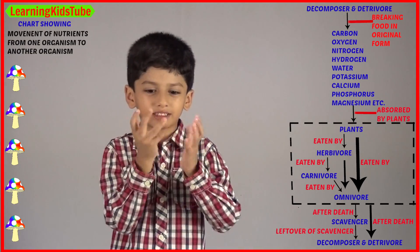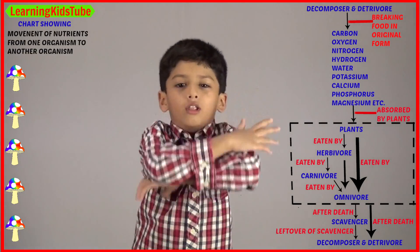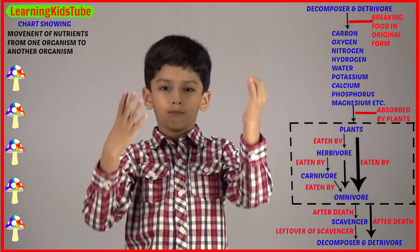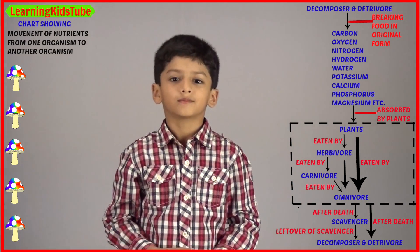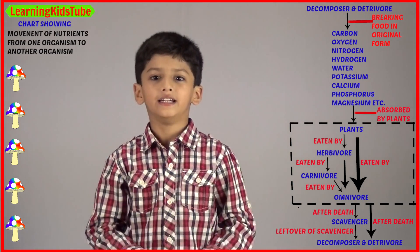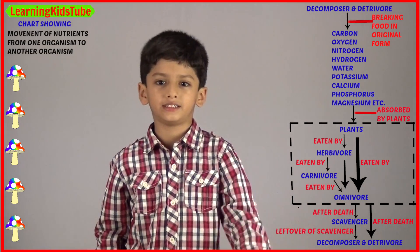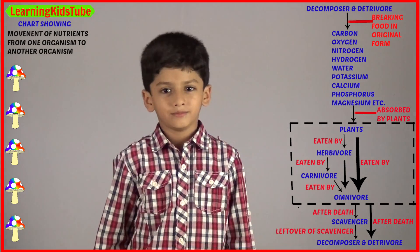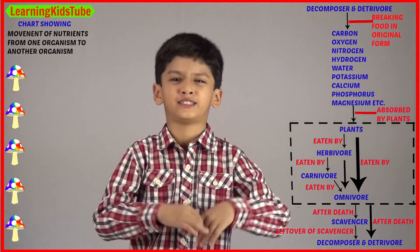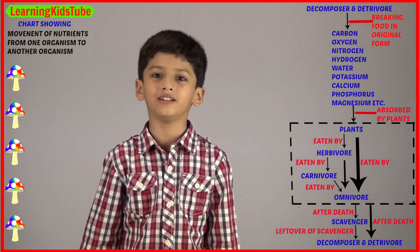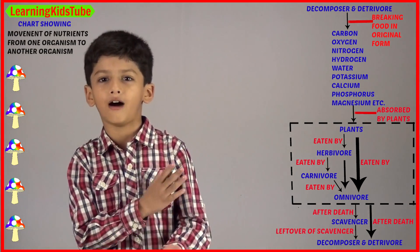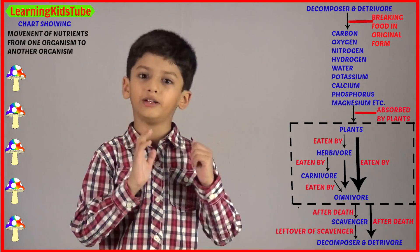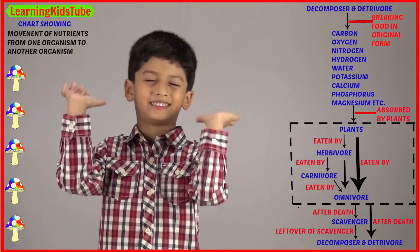We have already discussed these chemical elements in the question about nutrients. These elements again mix into the soil, are released into the air, and are again ready to be absorbed by plants. In this way, the same basic elements move from one organism to another. Only decomposers and detritivores have the ability to break them down into their original form, which is why they are very important for balancing ecosystems.